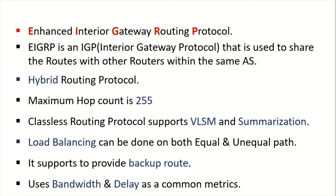A main advantage of using EIGRP is that it supports load balancing. For example, from a source to destination, if there are four possible paths, normally data will flow only in the best path. But if we want the data to be shared across all four paths, that can be done. Load balancing can be performed on both equal and unequal paths, and it supports providing a backup route in case of a main route failure.